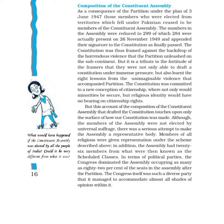Schedule caste marginalized groups hote hain jo past mein ignore kar diye gaye, jinke rights lete gaye, society unhe ignore karti thi. Schedule caste ko powerful banane ke liye constituent assembly mein 28 members schedule caste se the. Jahaan tak political parties ka sawal hai, partition ke baad constituent assembly mein Congress ka sabse zyada domination tha, kyunki Congress party ko 82% seats mili thin. But Congress khud ek diverse party thi jiske andar alag-alag opinions ke leaders the jinke sochne ka tarika alag tha.